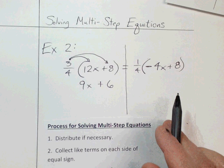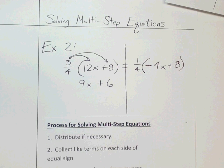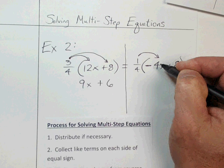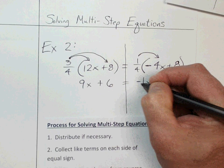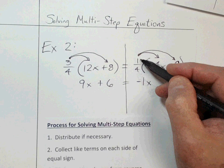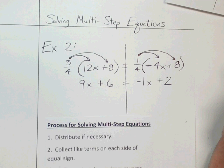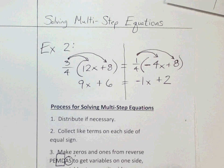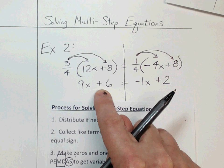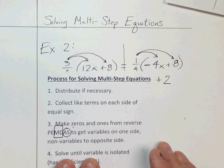Now distribute the right side. One-fourth of four is one, but a positive times a negative is negative, so this becomes negative 1x. Then one-fourth of eight is two. So the right side distributes to negative x plus 2. Now collect like terms on each side — there are no like terms on either side, so we move to step three.